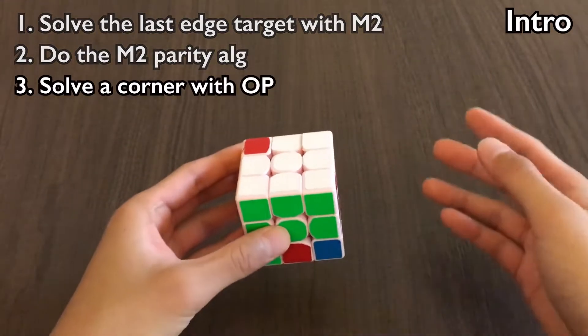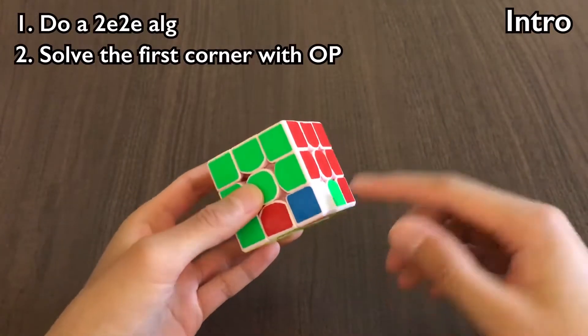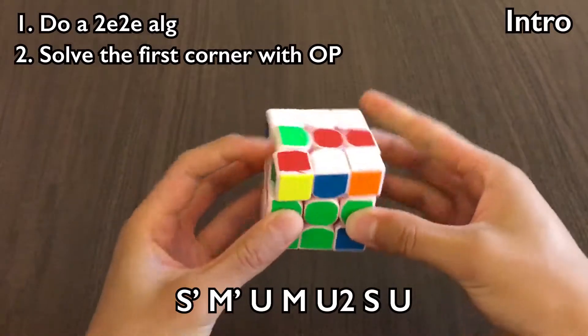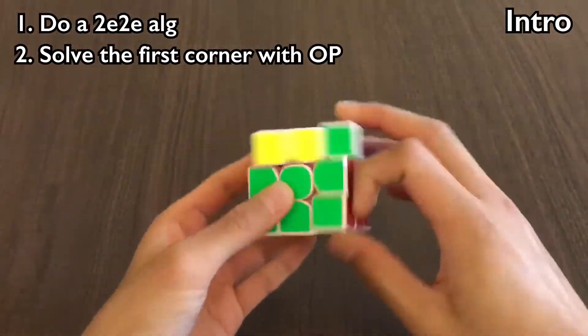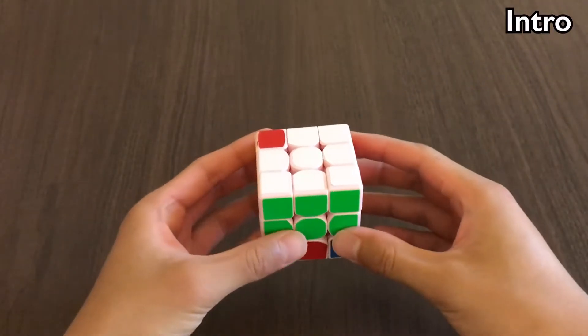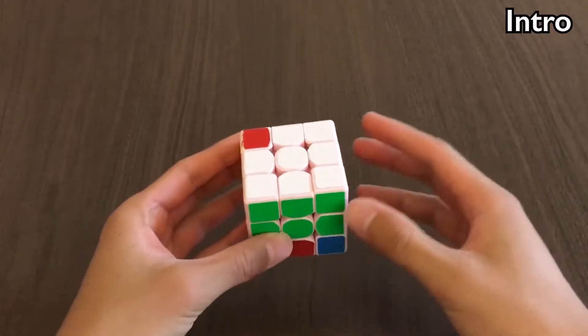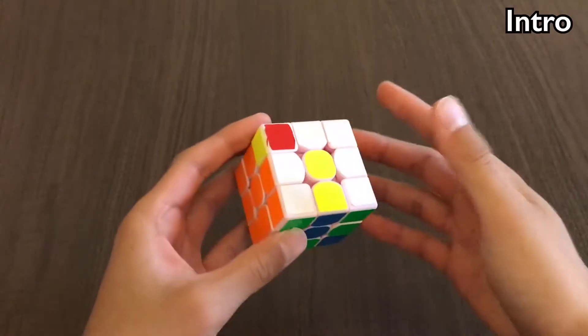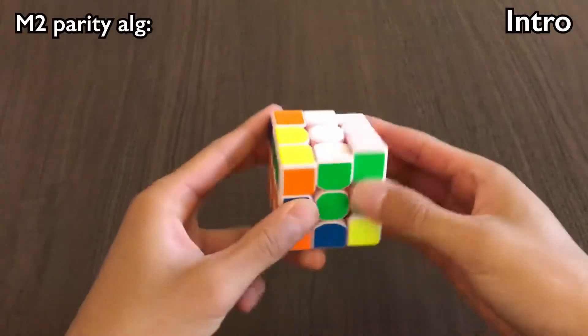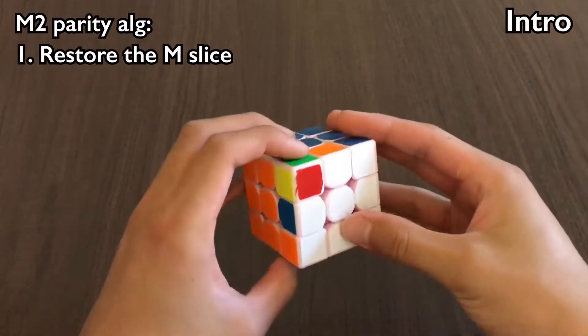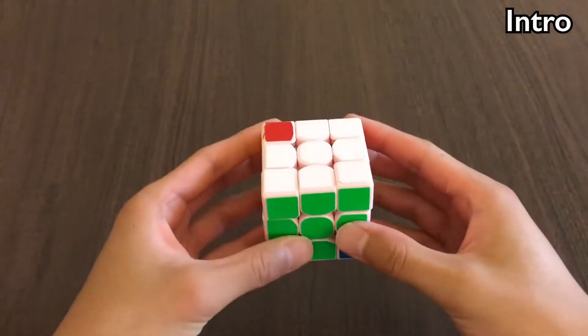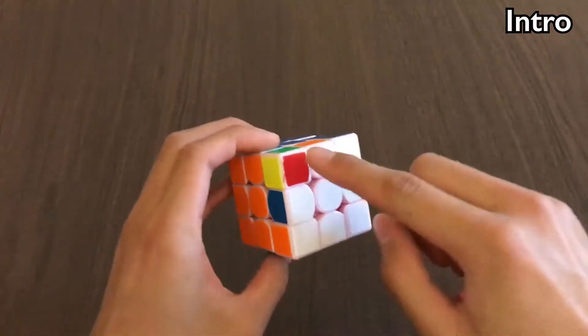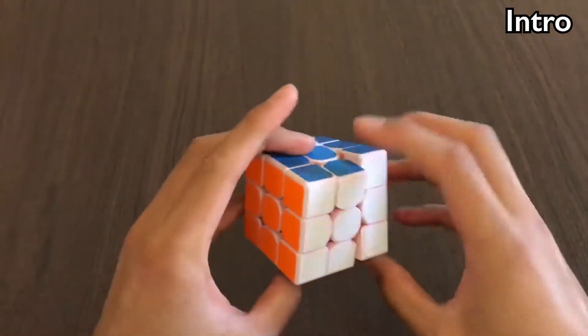However, 2E2E combines the first two steps. Instead of solving the last target with M2 and then doing the M2 parity alg, we can just do one 2E2E alg, and then solve the corner with old Pacman. So why did that work? Well, to understand that, we need to see what the M2 parity alg actually does. So after solving the last edge target with M2, what the M2 parity alg does is restore the M-slice, and more importantly, swap UB and UL. Now the reason we want UB and UL to be swapped is because after we do the last corner with old Pacman, it's going to swap them right back.